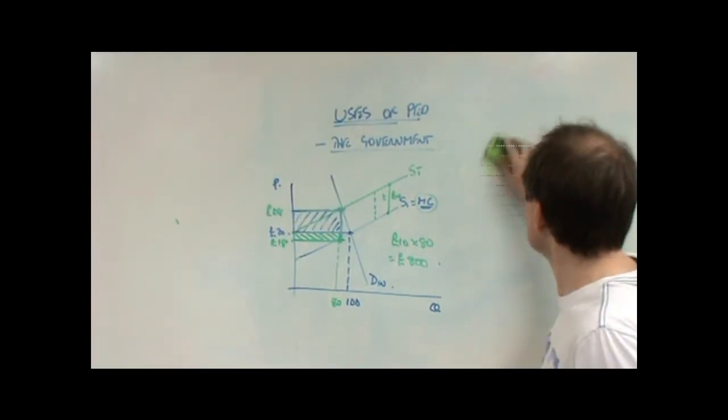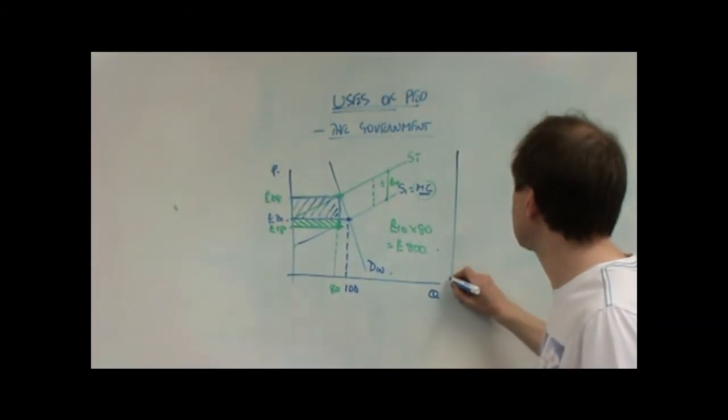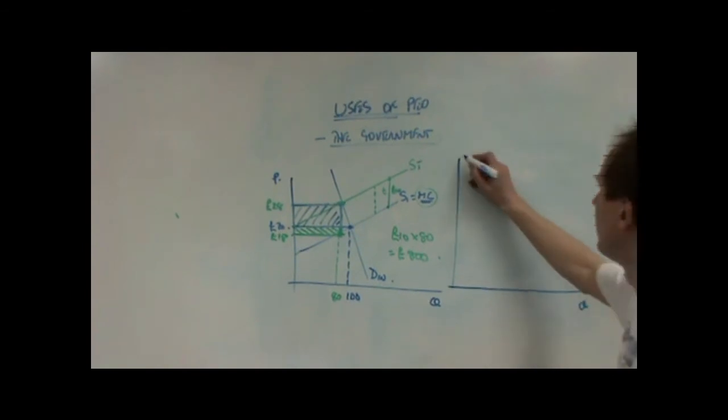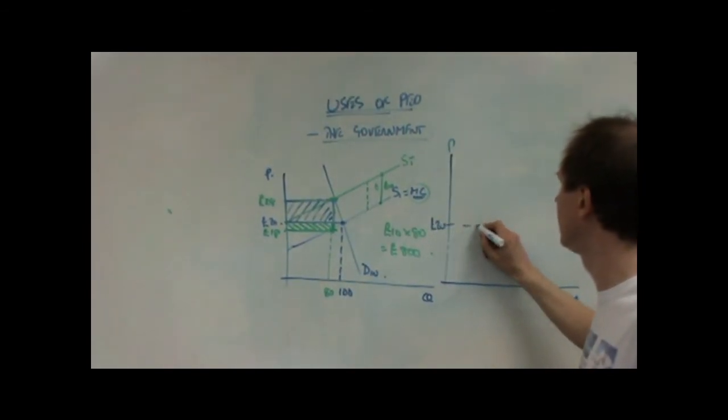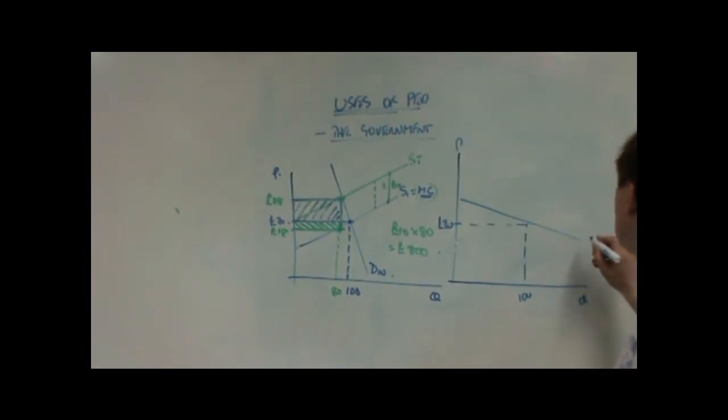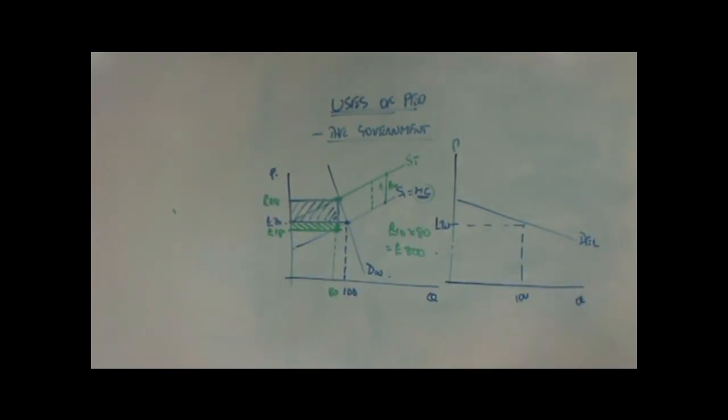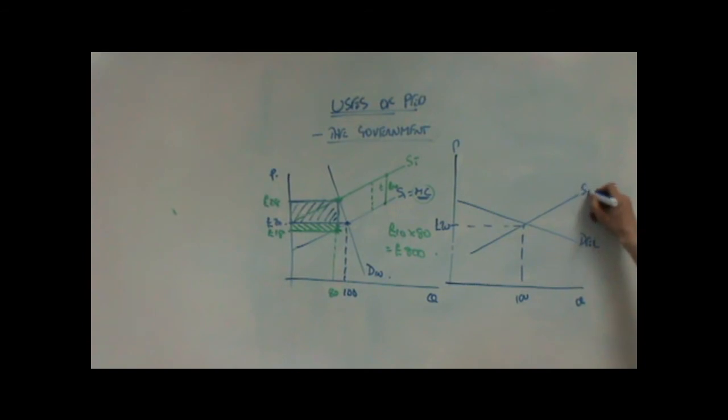If we contrast that with a more price elastic demand curve. If we try and get roughly the same starting point. But we change the gradient of the demand function to be more elastic. I'll try and get roughly the same supply curve like that.